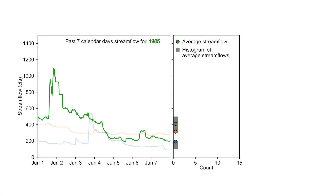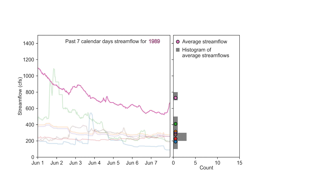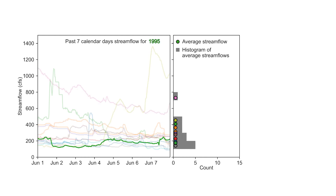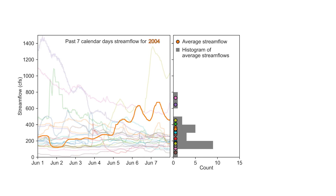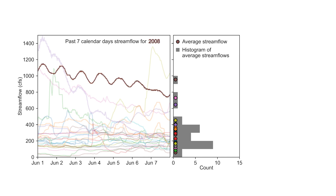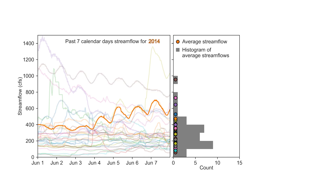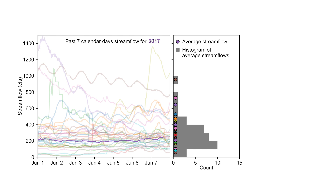The percentiles these colors represent are derived from simulated streamflows representing a multi-decadal climatology. Each of the simulated 7-day time series is averaged to provide a distribution of streamflows representative of the past 7 days. The same method is applied for 14 days.